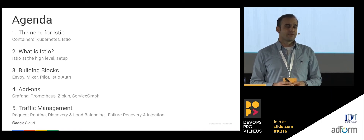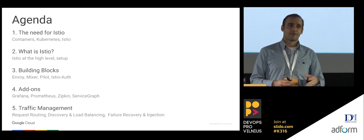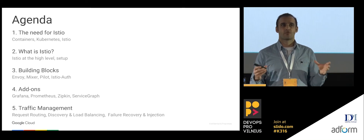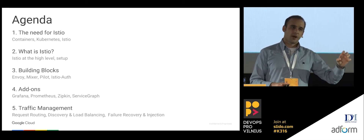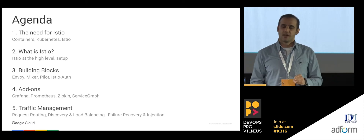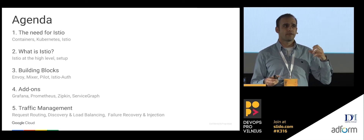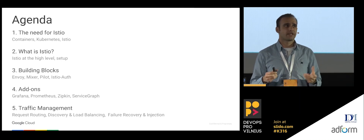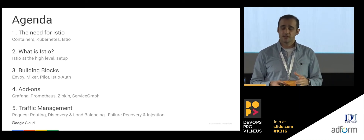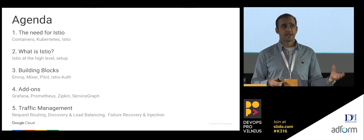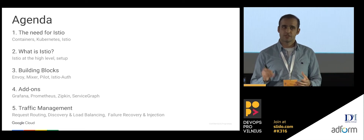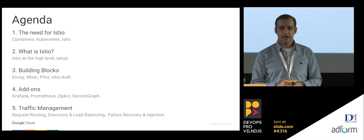And finally, another great thing about Istio is that you can change traffic rules dynamically. You can define which microservice talks to what microservice, set rules between them, do traffic splitting, fault injection, and all those cool things — all dynamically.